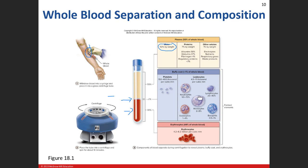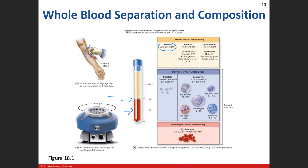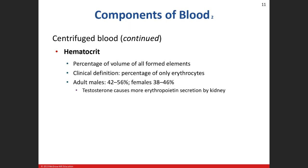Now we get into the buffy coat — platelets and leukocytes — and that's less than 1% of your overall blood. Finally, the erythrocytes make up close to, but not quite, almost half — 44% of your overall blood is going to be red blood cells.